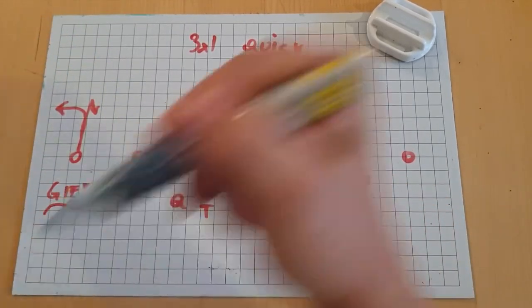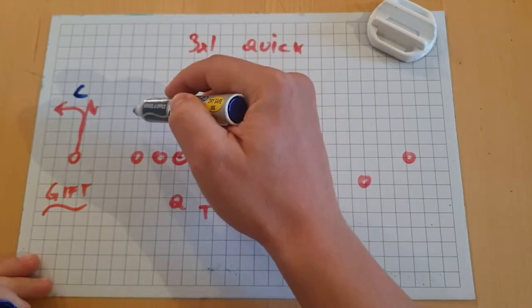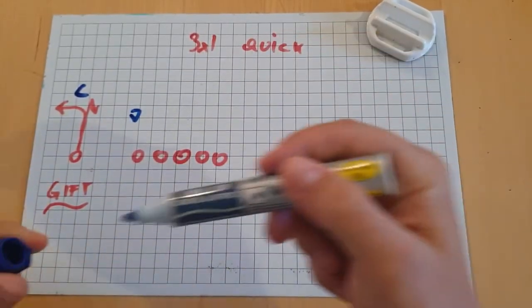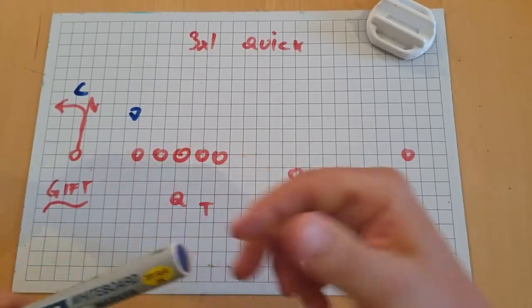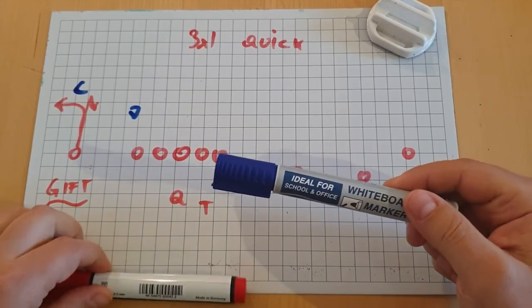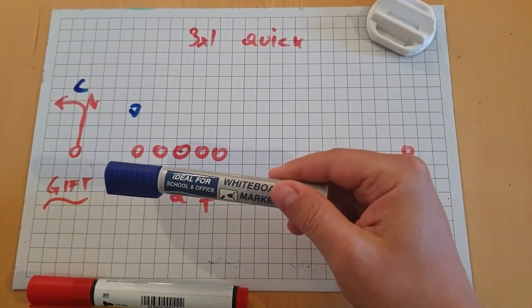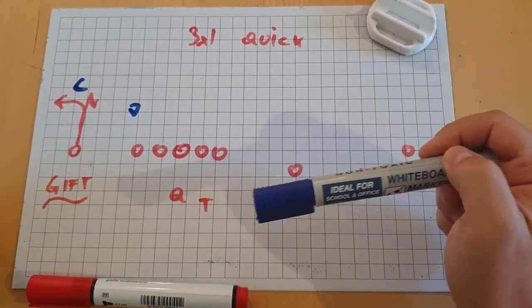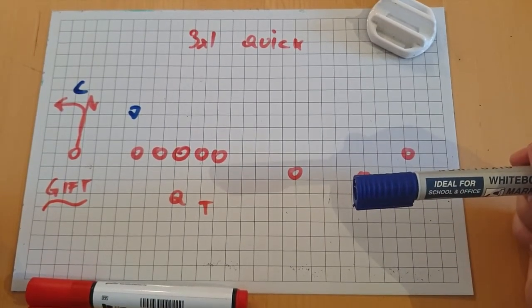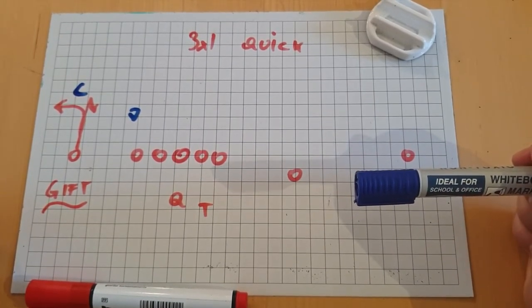What does that mean? It means that if the cornerback and the next defender to the inside are further away than five yards, maybe six yards, he can consider this a gift and take this single receiver every time.